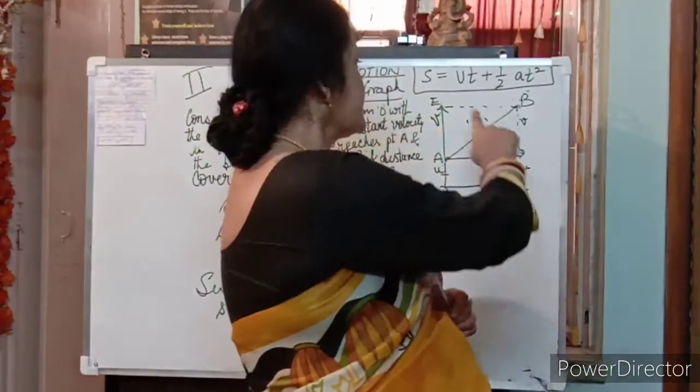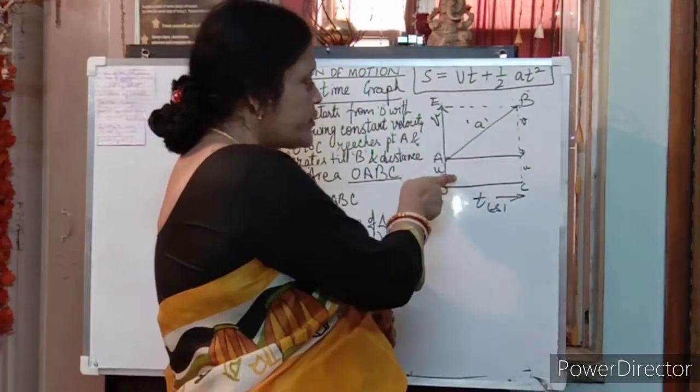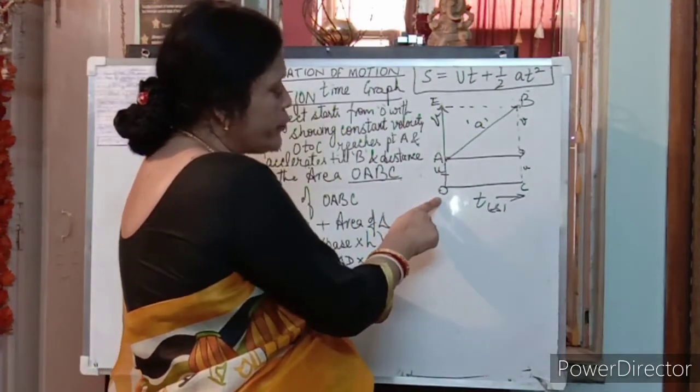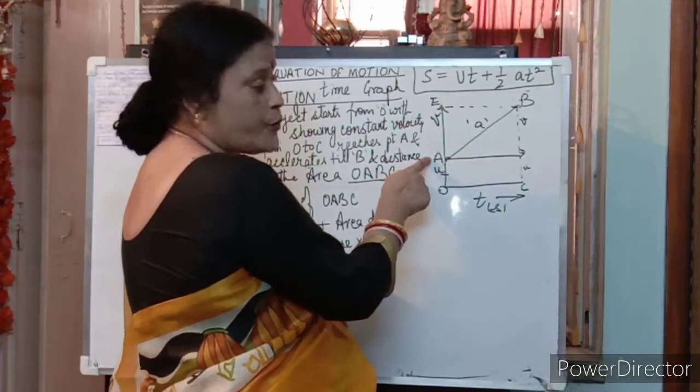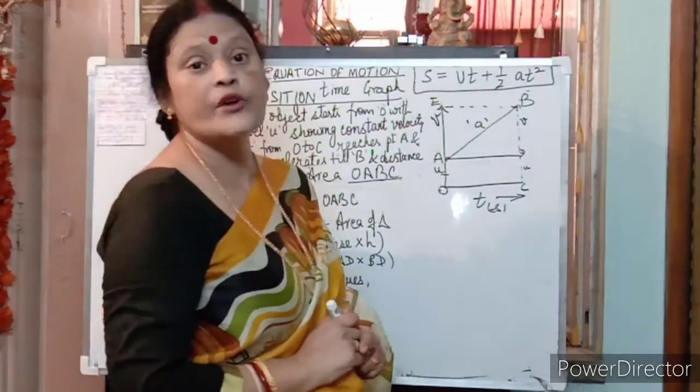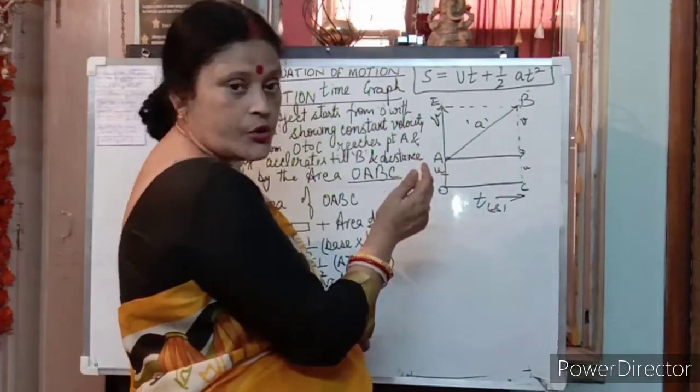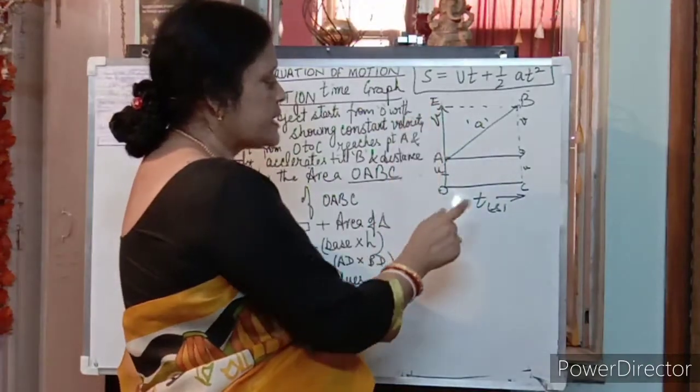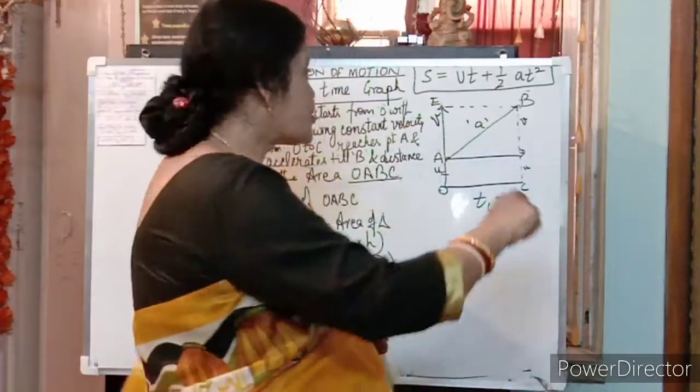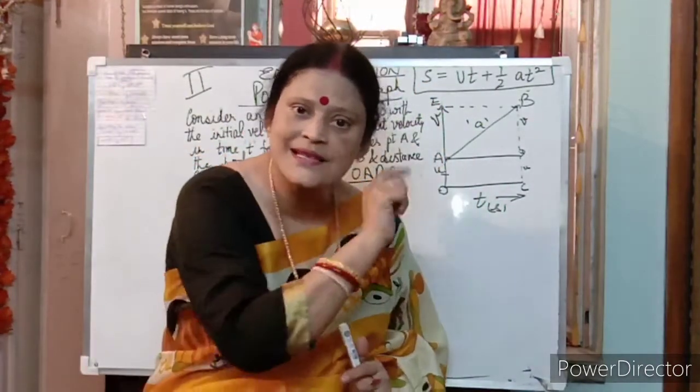Now, this is the second equation. Already in my previous video I explained about this graph that consider an object starts from point O, reaches to point A for the constant velocity and then it accelerates till point B. You all know about this is the initial velocity O to A, final velocity and this is time taken. Today in the second graph we will go with position time graph that is position means how much distance has been covered.